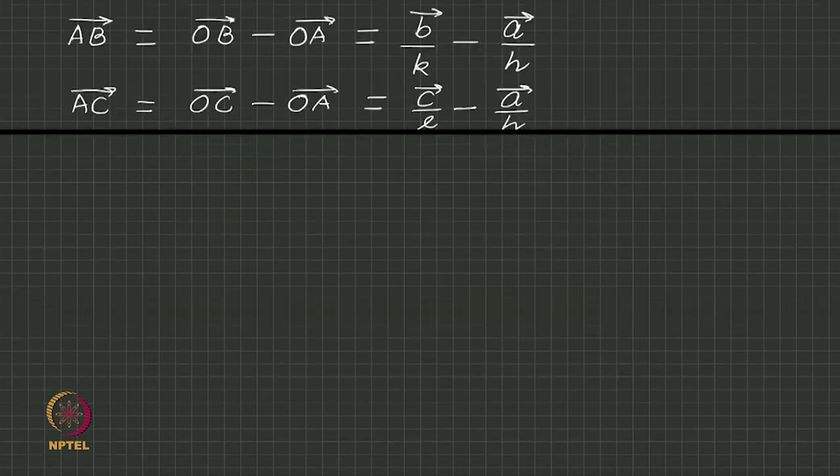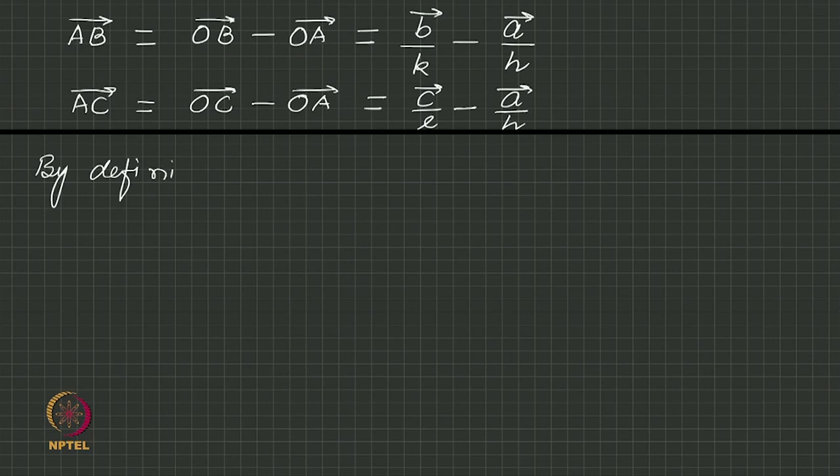And now by definition, G star h k l is a vector. We can use three horizontal lines to show that this is actually a definitional equality. It is h a star plus k b star plus l c star.